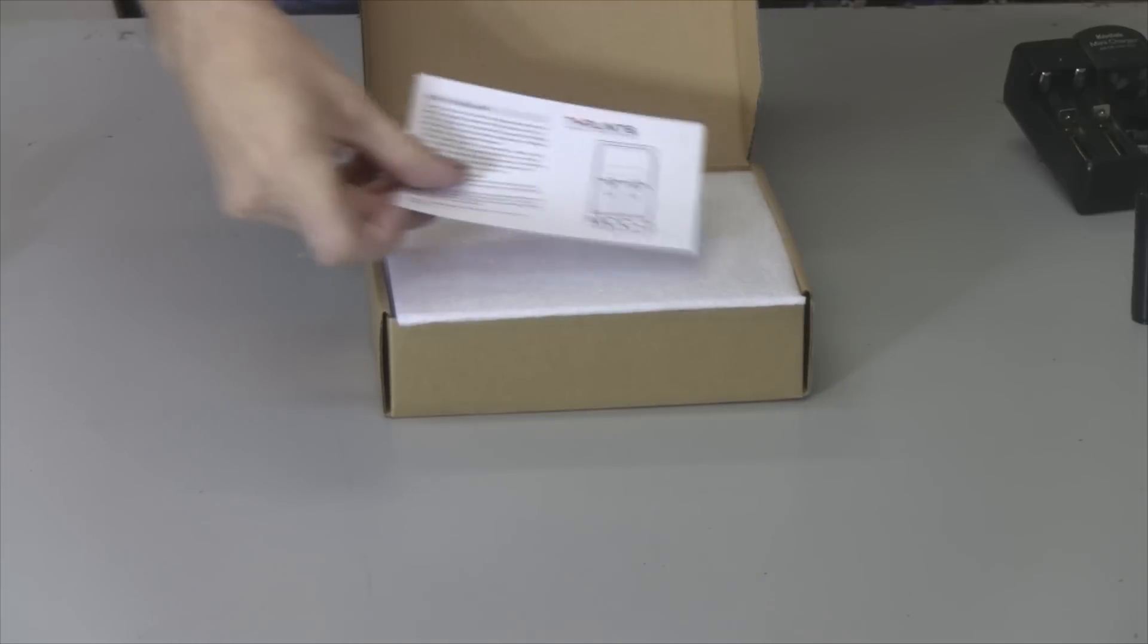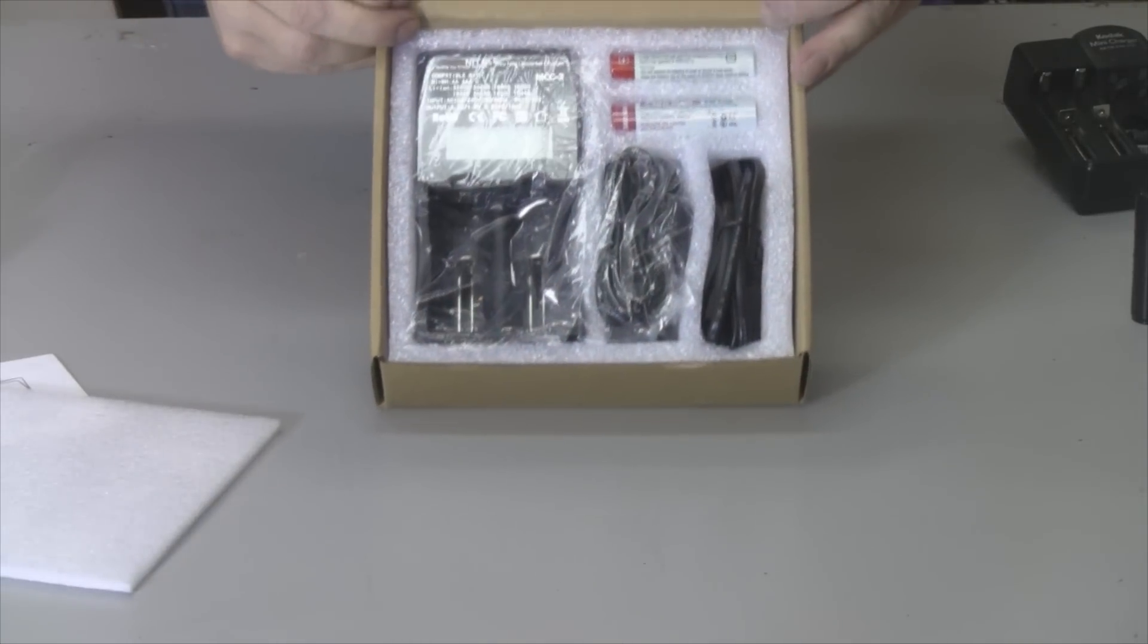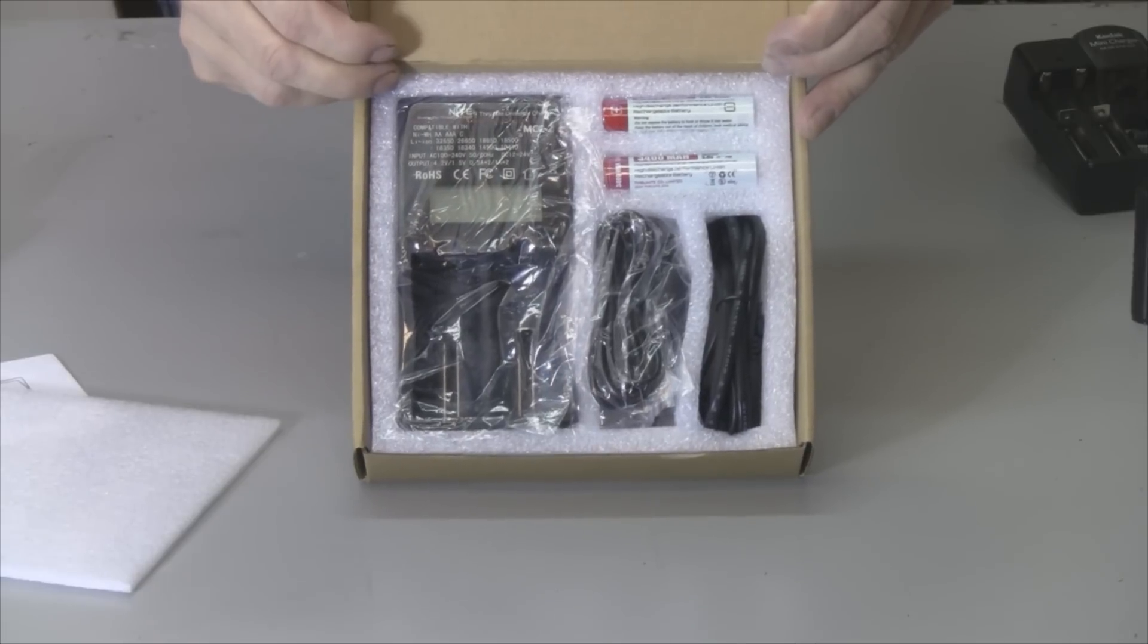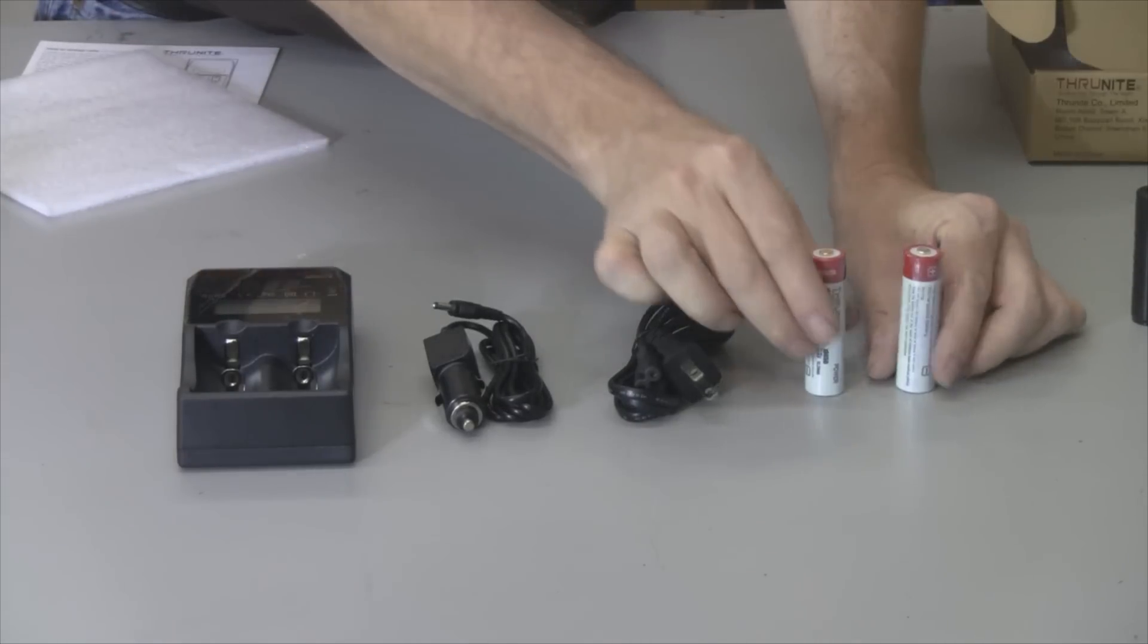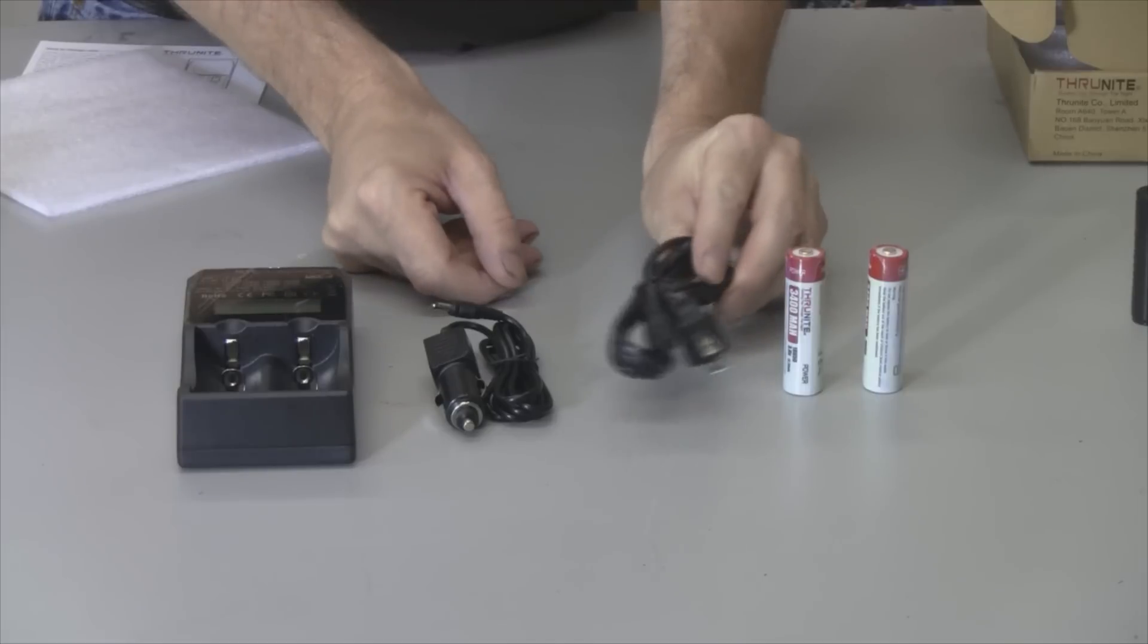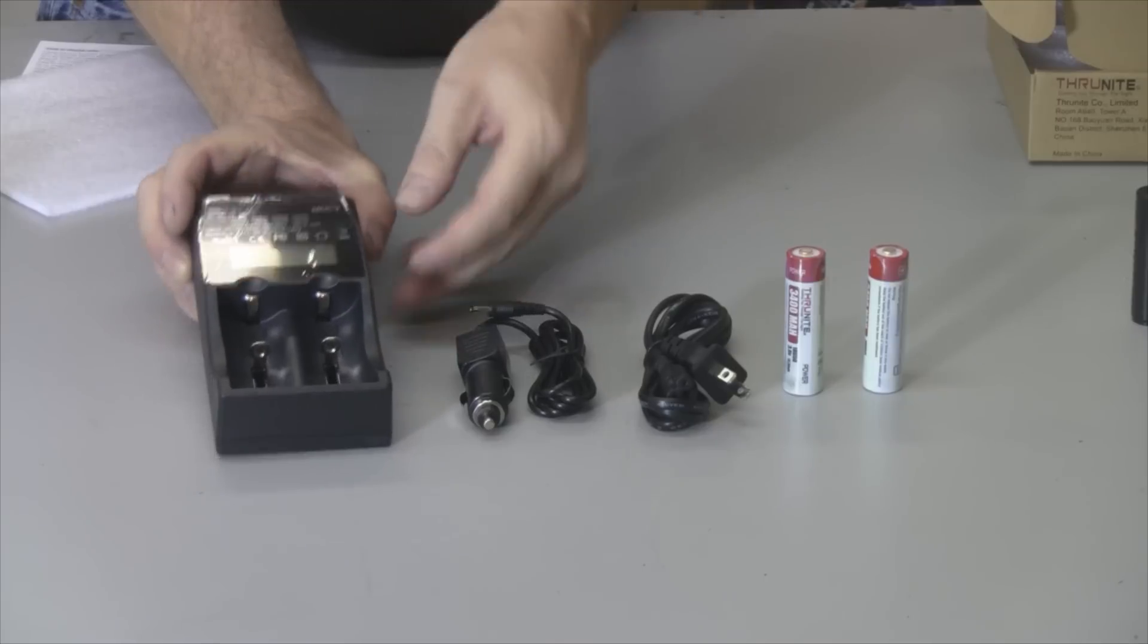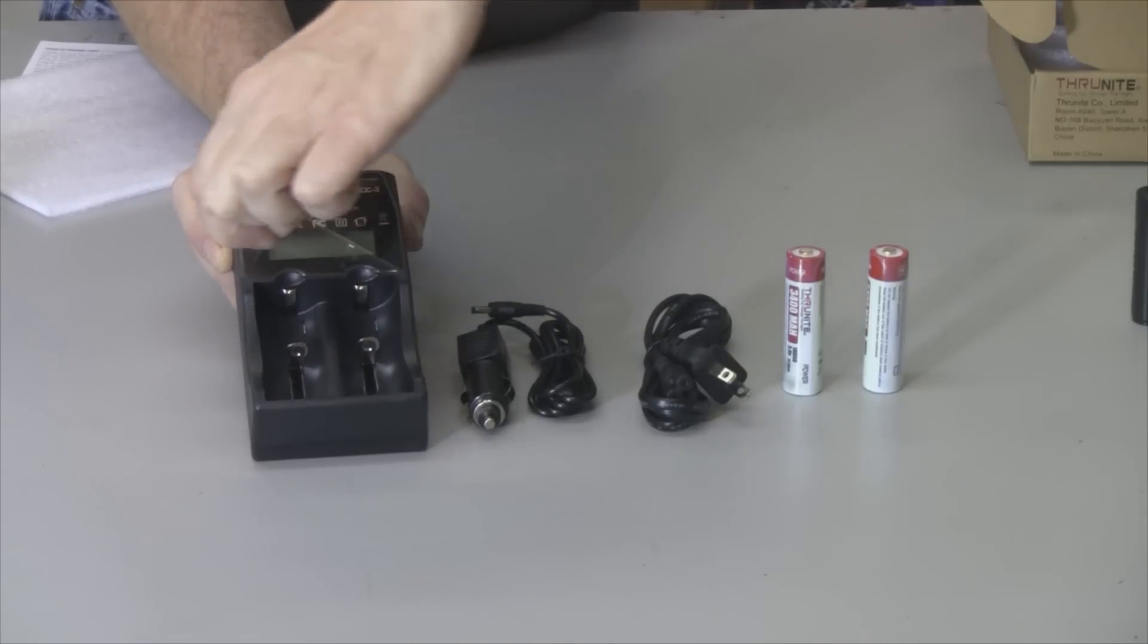Inside comes with instructions and here is everything that's in the box. I haven't opened it yet, so let's open it and give it a try. This is the Thrunite MCC-2 kit and it comes with two 18650 batteries, these are Thrunite brand, AC adapter, car adapter for charging, and the unit itself. It comes protected here, just peel that off the display.